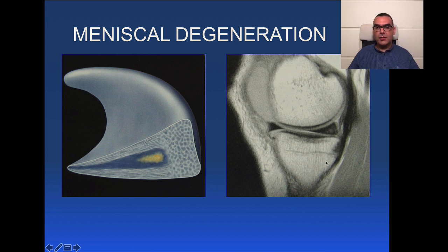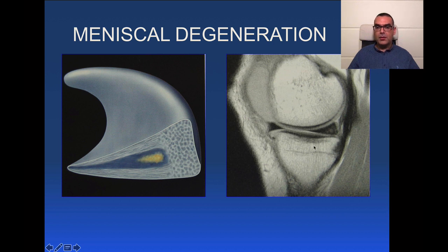Let's look at illustrative MRI images. First, meniscal degeneration: this is an intrasubstance hyperintense signal not reaching the meniscal surface. The inferior and superior surfaces are intact. This is the red zone — the meniscal base — where primary repair is possible. The meniscal apex should be a clear-cut, pencil-sharp triangular apex in the horns. Of course, a similar signal in a 16- or 20-year-old patient without trauma is not called meniscal degeneration.